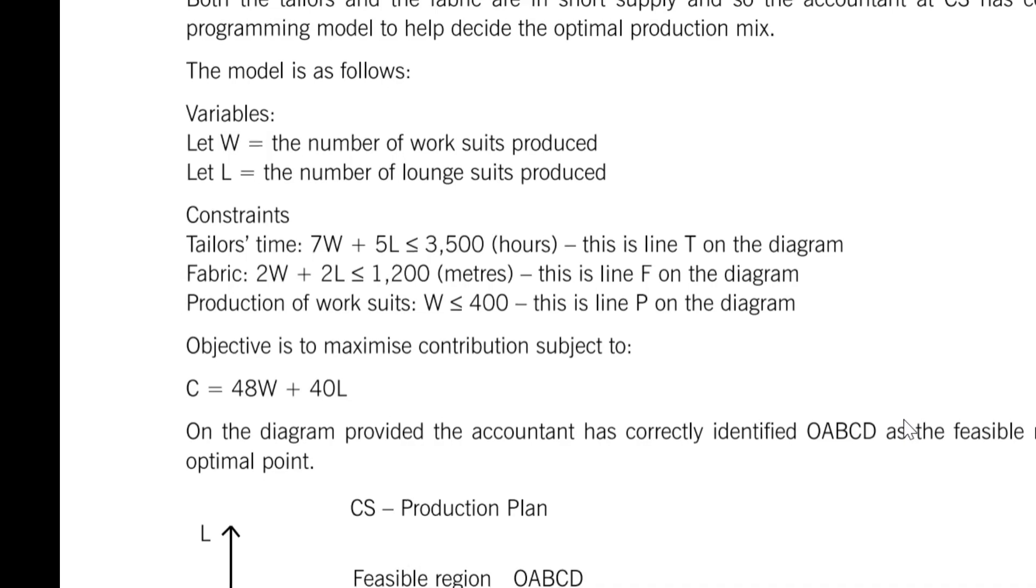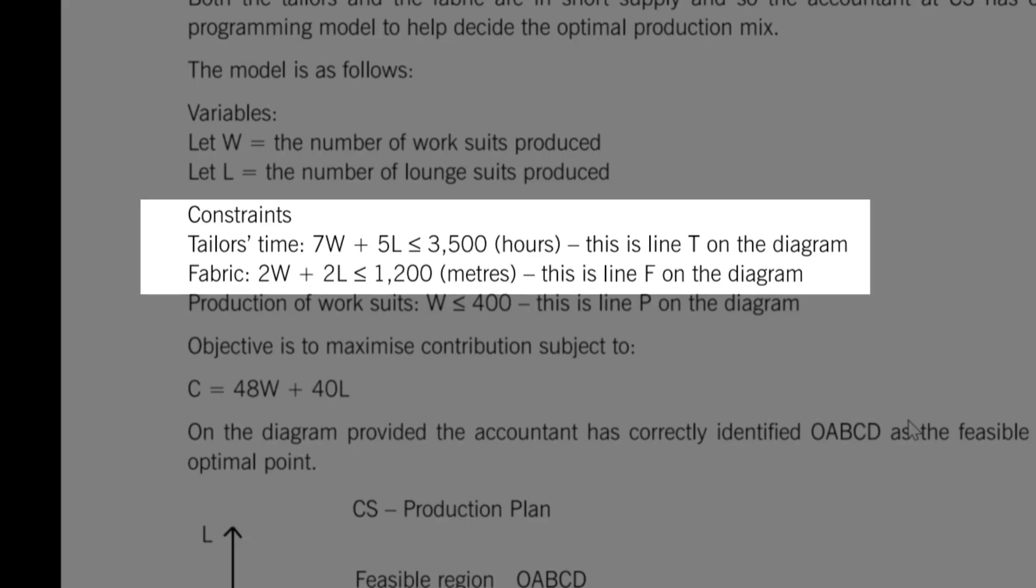If we look further into the question, we can find a section where the constraints are listed. There's the tailor time equation. There's the fabric equation. And we can see that each equation has two variables.